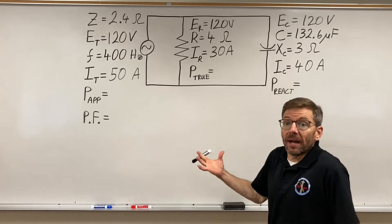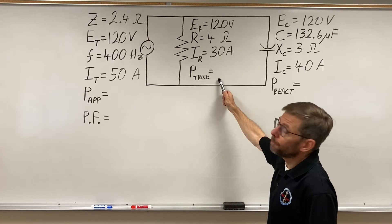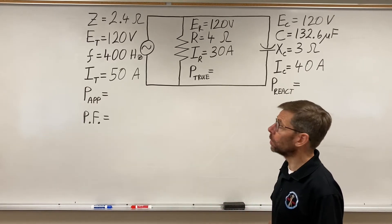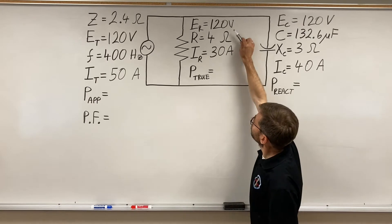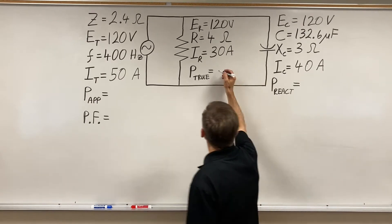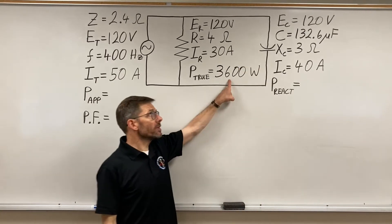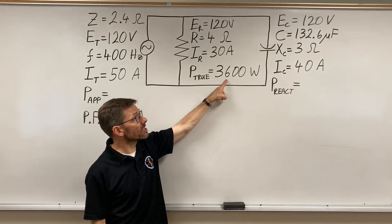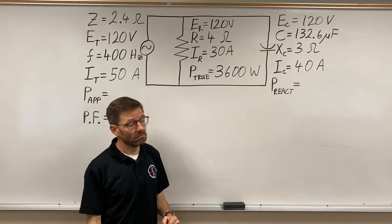Well, we go back to Ohm's law. Let's figure our true power, our watts, our working power doing the real work. Volts times amps gives us 3,600 watts, or I could call it 3.6 kilowatts if I wanted to.